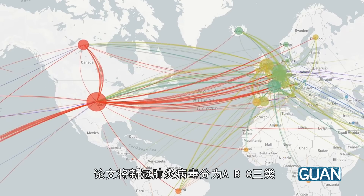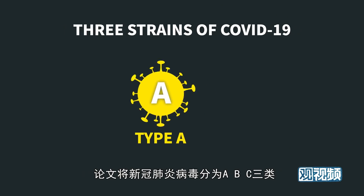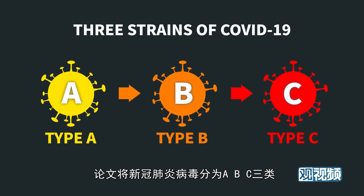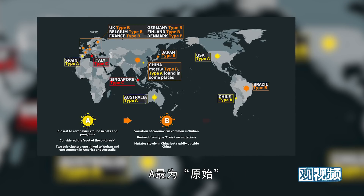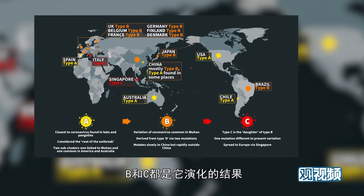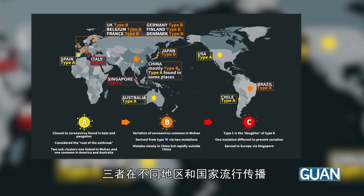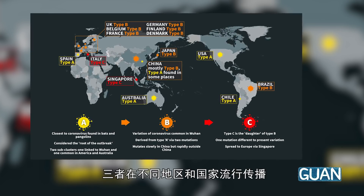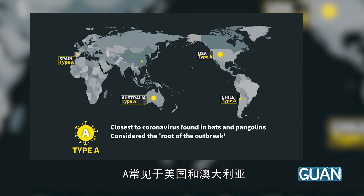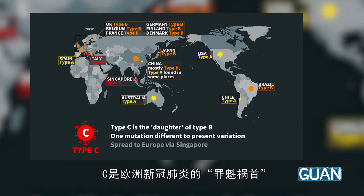The paper identified three variants of the virus — A, B, and C — with A being the original virus and B and C being subsequent derivatives, each prevalent in a different region of the world. A was mainly seen in the US and Australia, B in East Asia including China, and C in Europe.